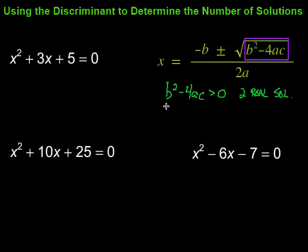The second thing that can happen is that b squared minus 4ac, again the discriminant, could be equal to zero. In that case, there's going to be one real solution. And the reason for that is if we notice what's going on there, if it was zero...